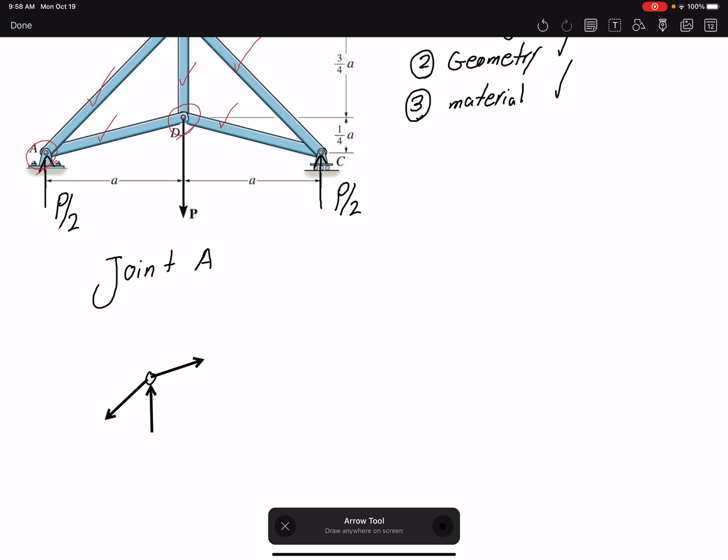In this problem, because we have the two members, both of them are going to have X and Y components. So finding a direction might not be easy. But we can assume a direction.